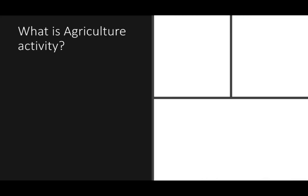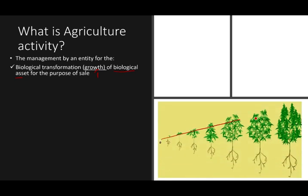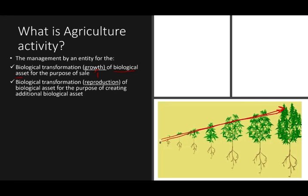Agricultural activity is the management by an entity for the purpose of biological transformation — which is the growth of a biological asset — for the purpose of sale. For example, you might be growing a cannabis plant to sell it; that's a biological asset and the growth process is an agricultural activity. Or biological transformation can mean reproduction of a biological asset for the purpose of creating additional biological assets.